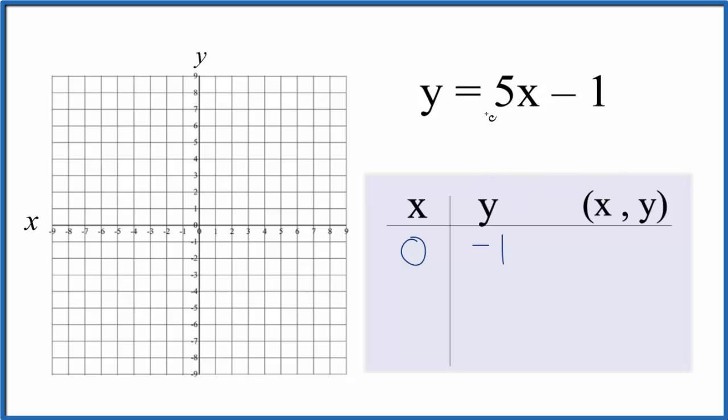We could choose really any numbers for x but we want things that are going to show up, give us values or points that show up on our graph here. So if I chose 1, 5 times 1 is 5.